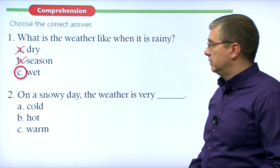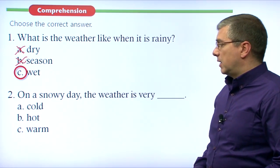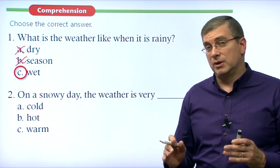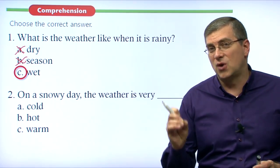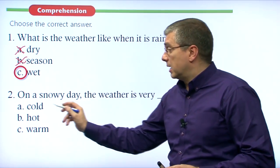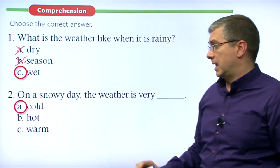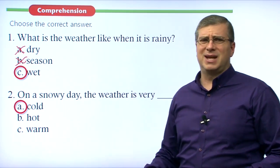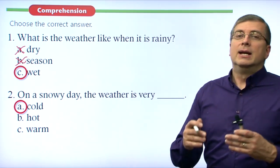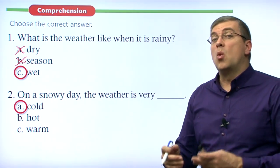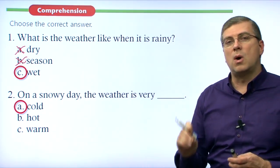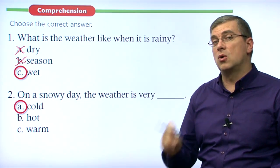Number two: on a snowy day, the weather is very what? We're talking about temperature. Snow is solid — it's frozen solid. For water to freeze solid, it must be very cold outside. That is our answer. Hot doesn't make sense because the snow would melt and become rain. Warm — again, snow doesn't occur in warm weather. It only occurs in very cold weather when it's so cold the water will freeze.